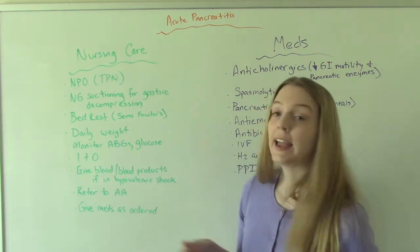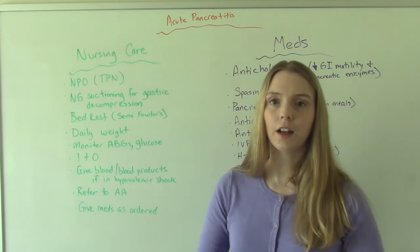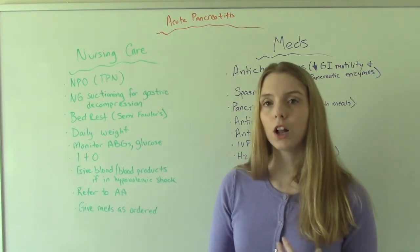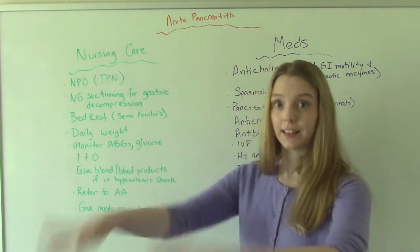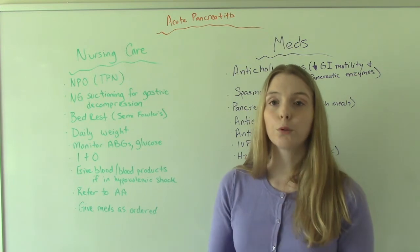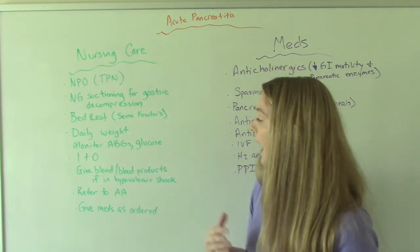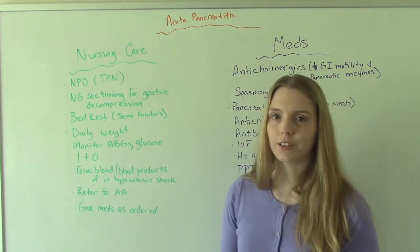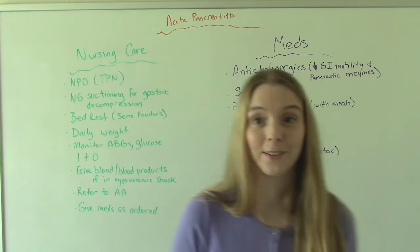We'll refer to AA when appropriate. If the patient has acute pancreatitis caused by long-term alcohol abuse, we can't just treat them and send them home — we have to address the alcohol problem and make appropriate referrals. And then we're going to give meds as ordered. There are a lot of meds with these patients, so let's talk about those.